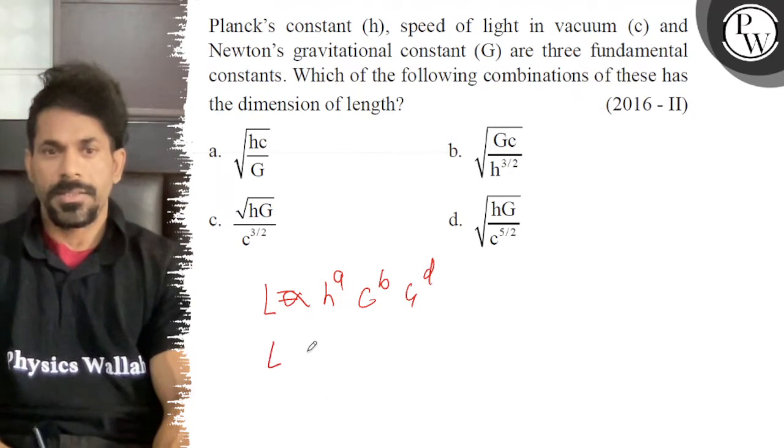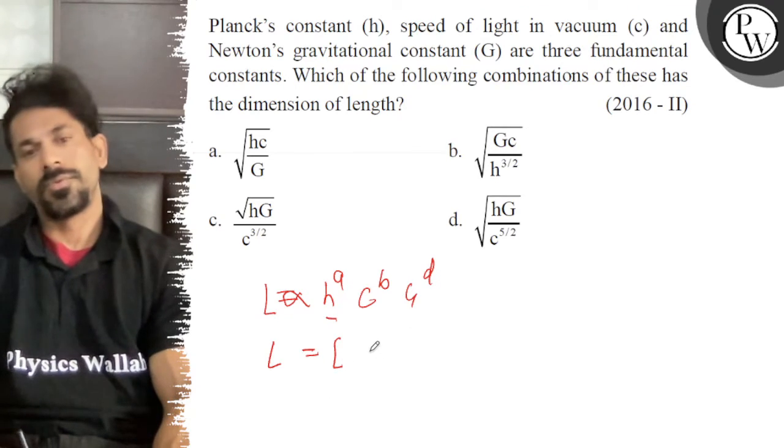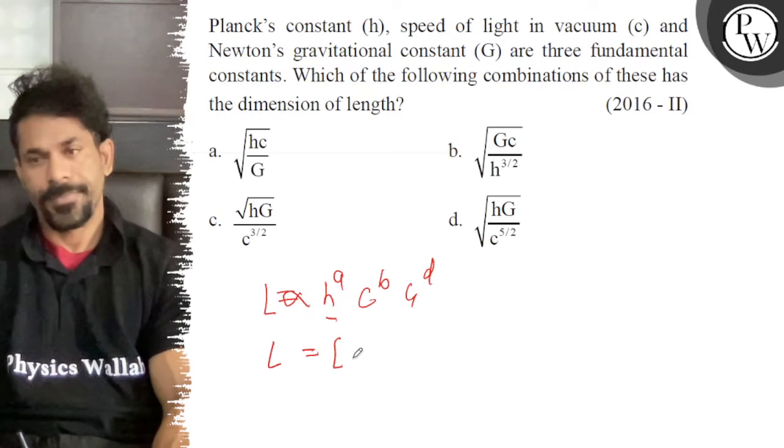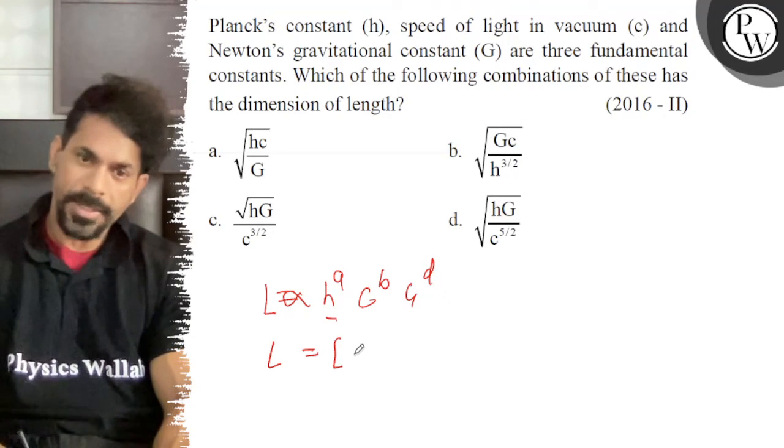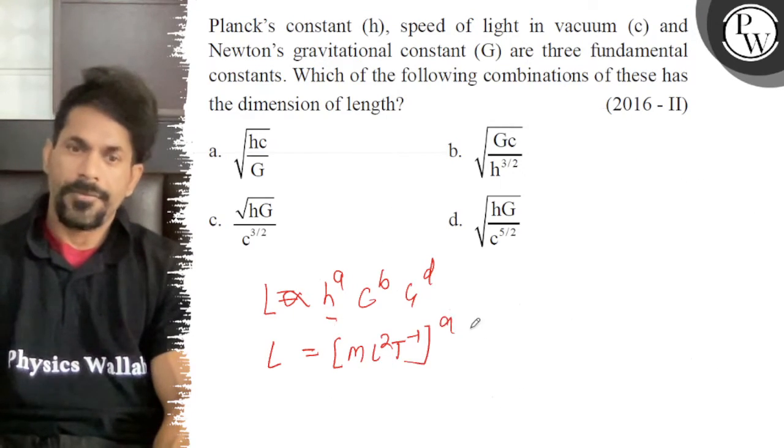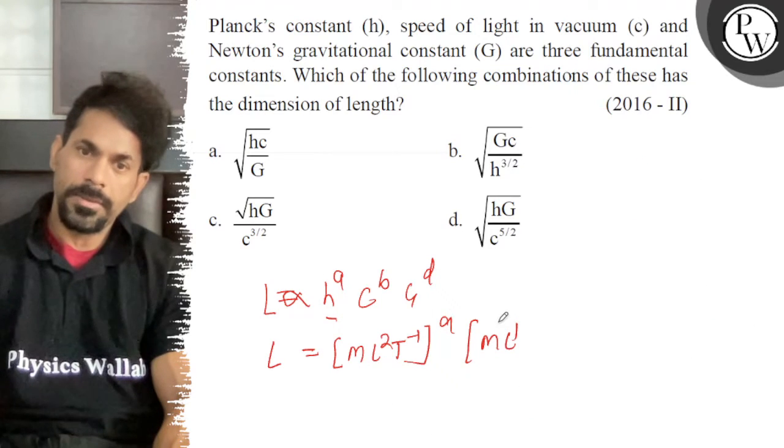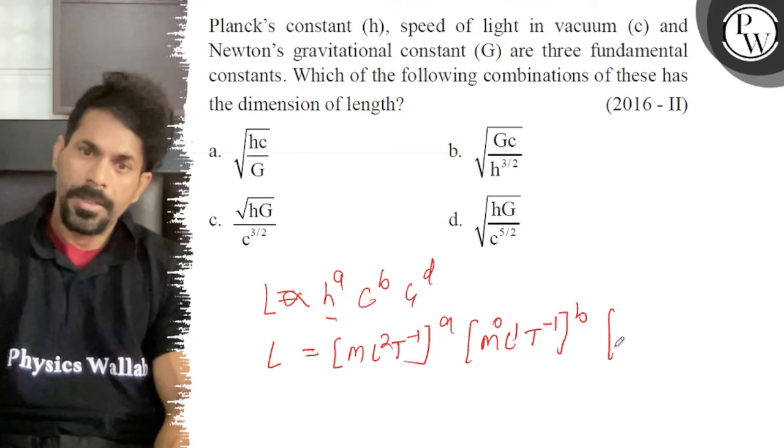So L equals Planck's constant, that is joule times second. h is joule times second, so ML²T⁻¹ to power a. c is MLT⁻¹ to power b, and M⁻¹L³T⁻² to power d.